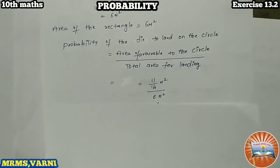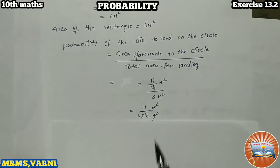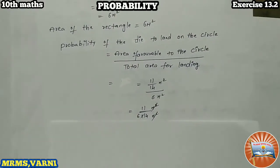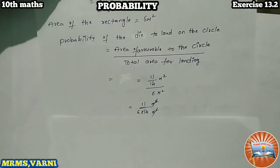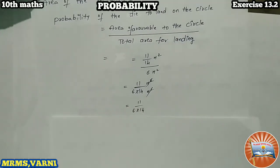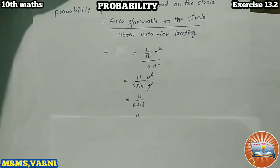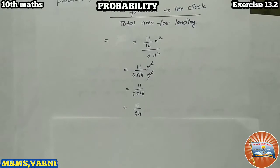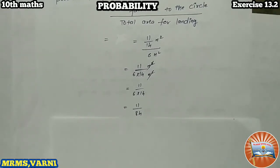11 by 14 divided by 6 it becomes. Meter squared meters gets cancelled. The remaining is 11 by 6 times 14. 14 times 6 is 84. 11 by 84 is the probability to land on the circle.